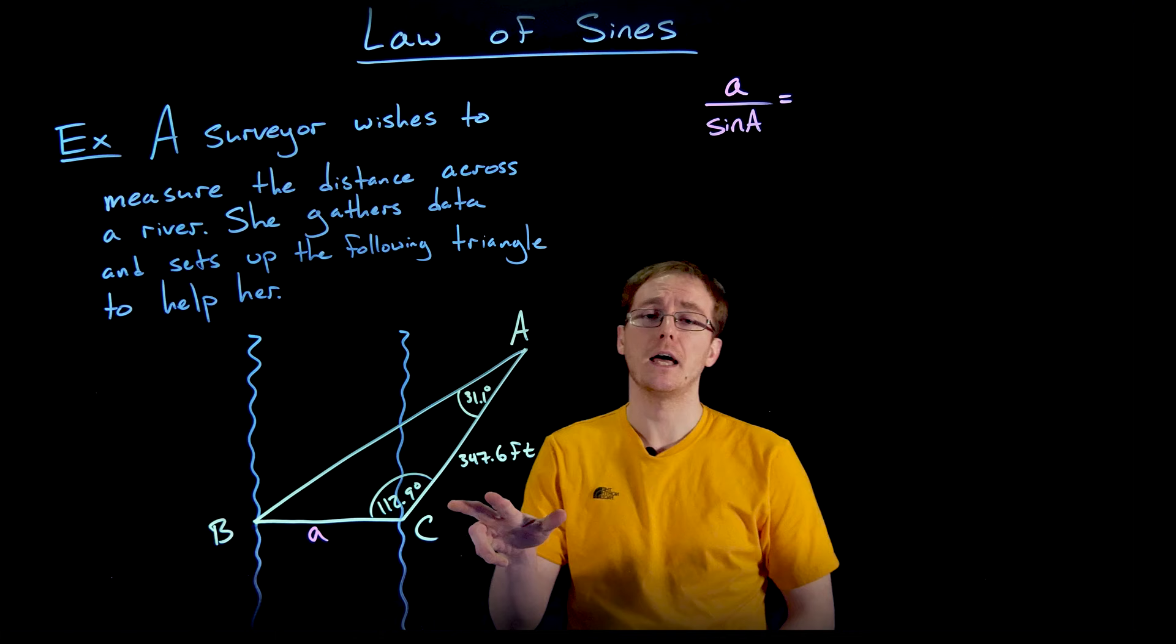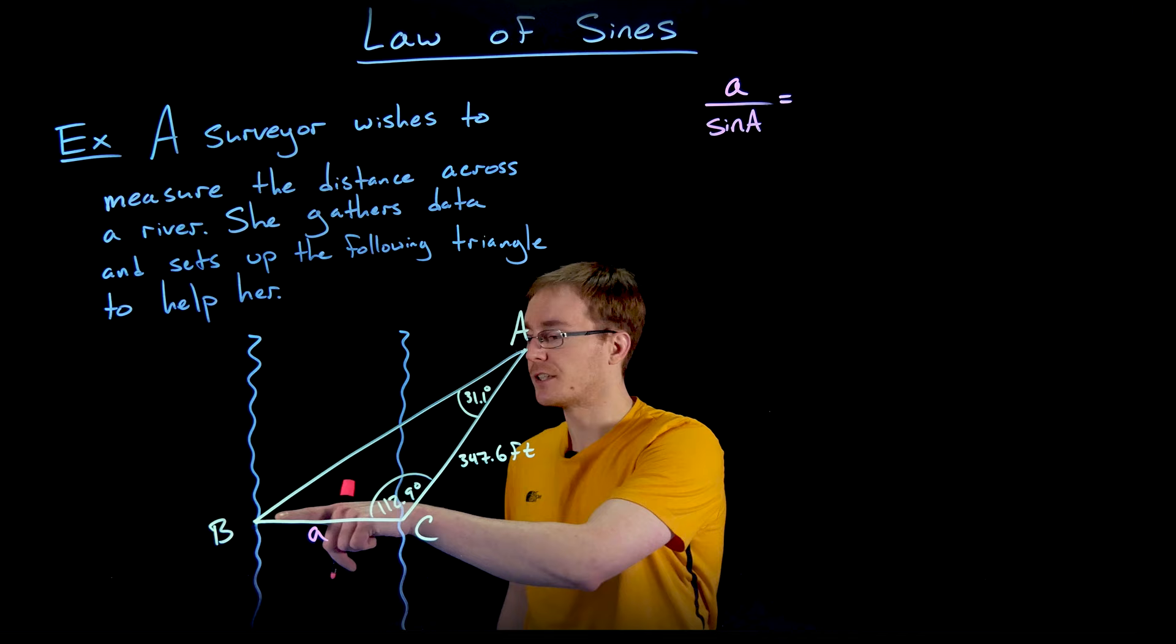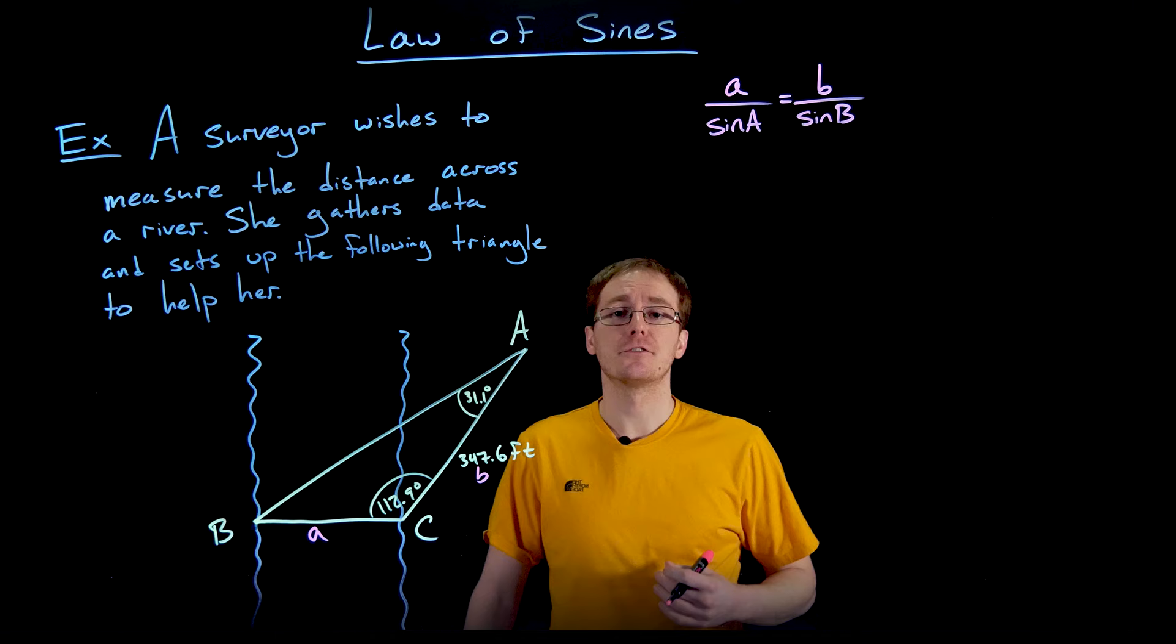This other piece of information we are given is 347.6 feet, that is opposite of our angle B, so that is our side length b. We're going to use the law of sines version where we have a over sine of A equals b over sine of B.